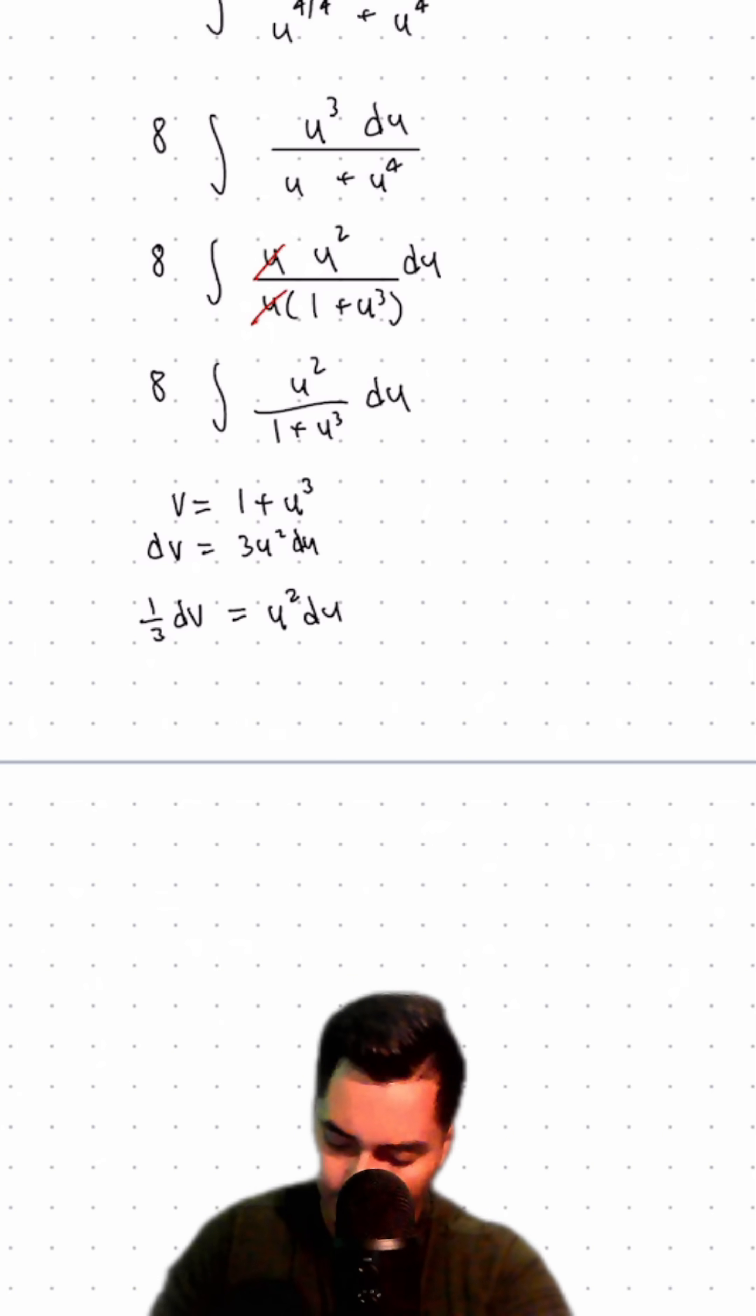Now I'm going to rewrite that integral as 8/3 times the integral. We have u squared du, which is now 1/3 dv. So that's dv in the numerator divided by our denominator, which was v.